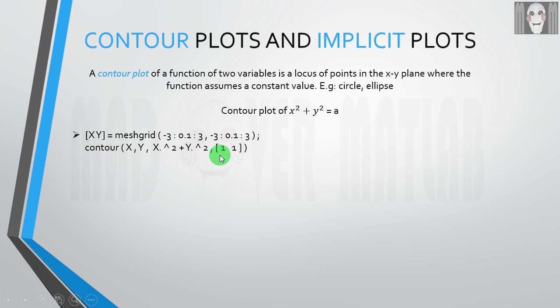Now the syntax of contour says that you cannot give a single argument here. So even if you want to plot a single contour, you will have to write this constant twice. When I say [1, 1] or [1 1], it means that my equation will be X squared plus Y squared equals 1, so the radius of my circle will be 1 unit.